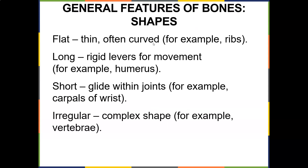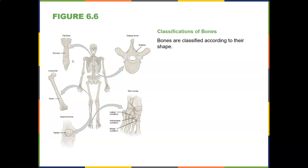The general features of bones — there are different kinds of shapes. Flat bones are thin but often curved, such as the ribs and the sternum. Long bones are rigid levers for movement, such as the humerus and femur. Short bones glide within joints — for example, the carpals of the wrist and bones of the foot. Irregular-shaped bones have complex shapes, such as the hyoid bone and the vertebrae. There is also the sesamoid bone, which is the patella.